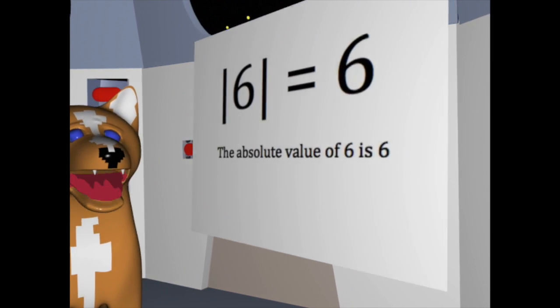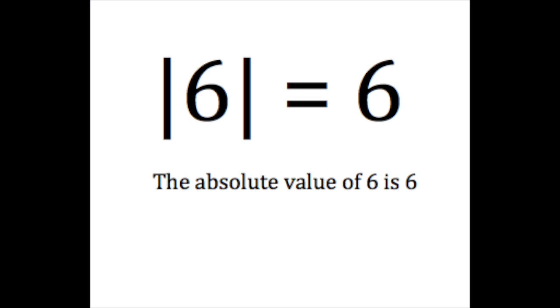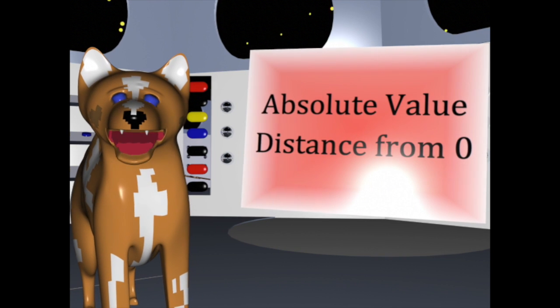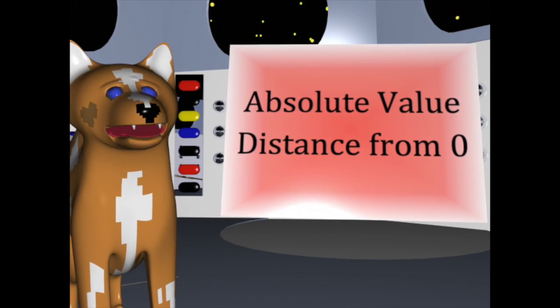The two lines on either side of a number indicate that it is the absolute value of that number. You can think of the absolute value as the distance from zero.